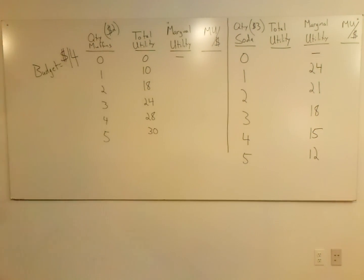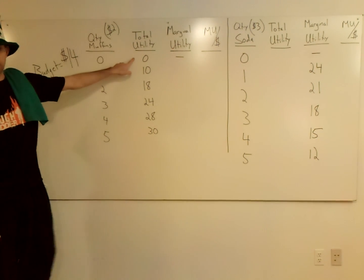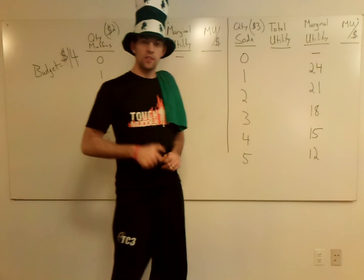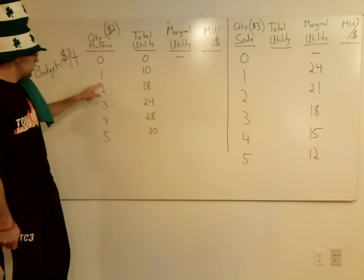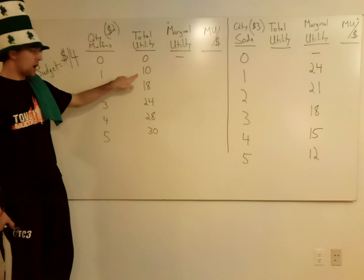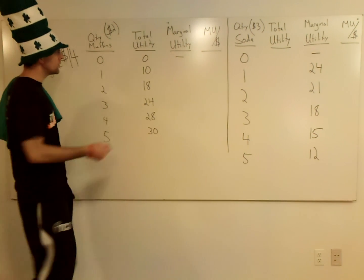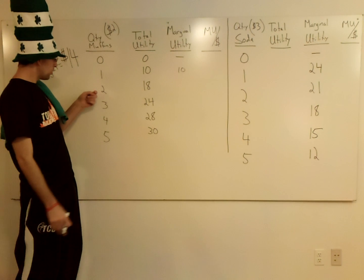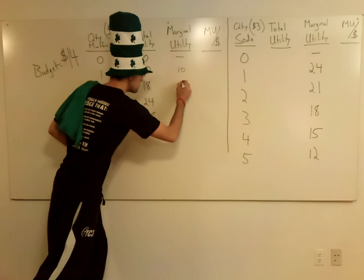You'll notice that the soda and the muffins are set up differently. Your muffins have the quantity and the total utility, but the soda has the quantity and the marginal utility. So if you look at the total utilities: when I get one muffin, I get a total utility of 10. When I had zero muffins, I had no utility. So that first muffin gave me 10 utils — that's my marginal utility. The second muffin brings my total utility to 18, so the second one gave me 8.